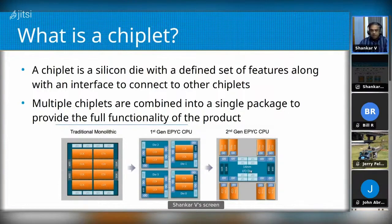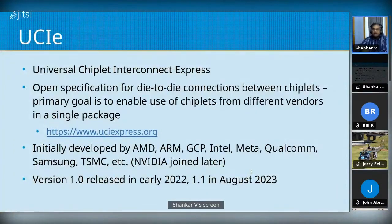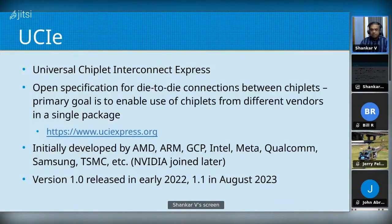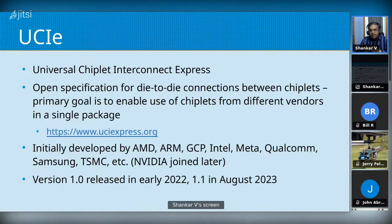The question becomes: how do we connect all these chiplets together? So far it's always been proprietary protocols — AMD developed their own, other companies came up with their own. Since they were only using chiplets within the same company, they could define their own protocol. But there's clearly a benefit to having a standardized protocol so you can mix and match chiplets from different vendors.